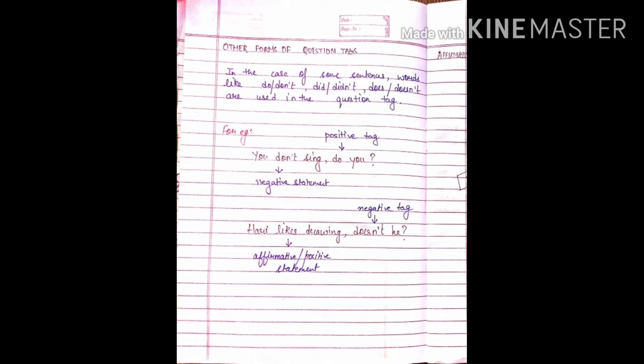Other forms of question tags: In the case of some sentences, words like do, don't, did, didn't, does, doesn't are used in the question tag. For example, 'You don't sing, do you?' and 'Hari likes trying, doesn't he?' In the first sentence, we have a negative statement followed by a positive tag — we have used 'do' followed by the subject 'you.' In the second sentence, we have a positive statement followed by a negative tag — we have used 'doesn't' followed by the pronoun form of the subject, Hari, which is 'he.'